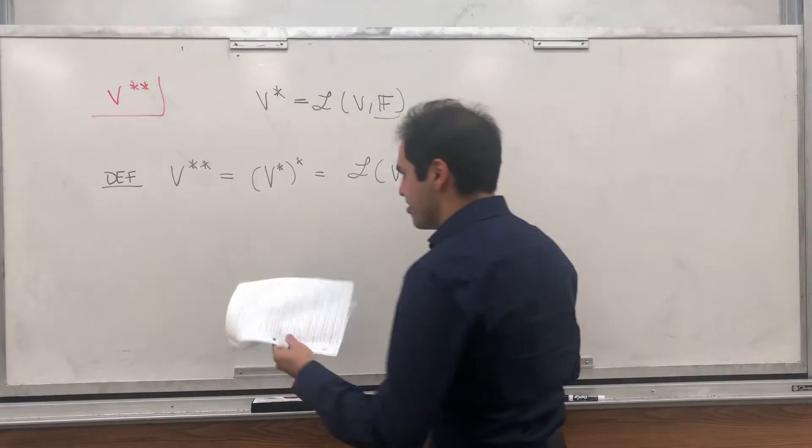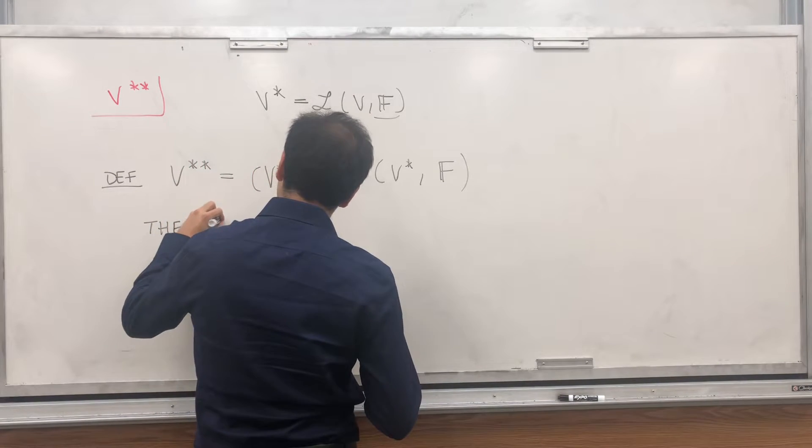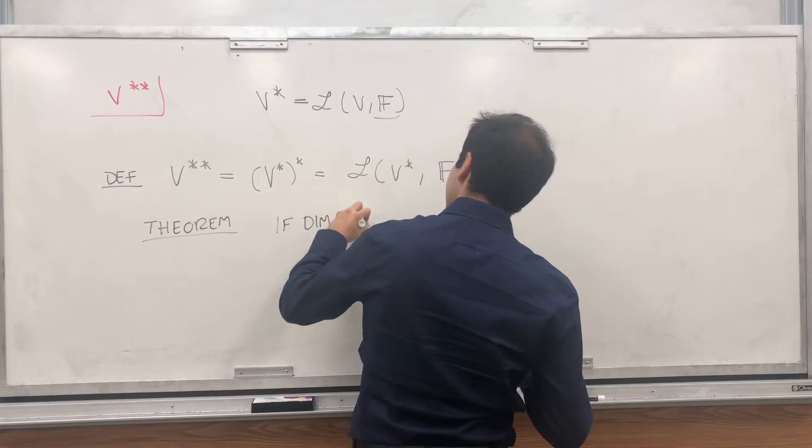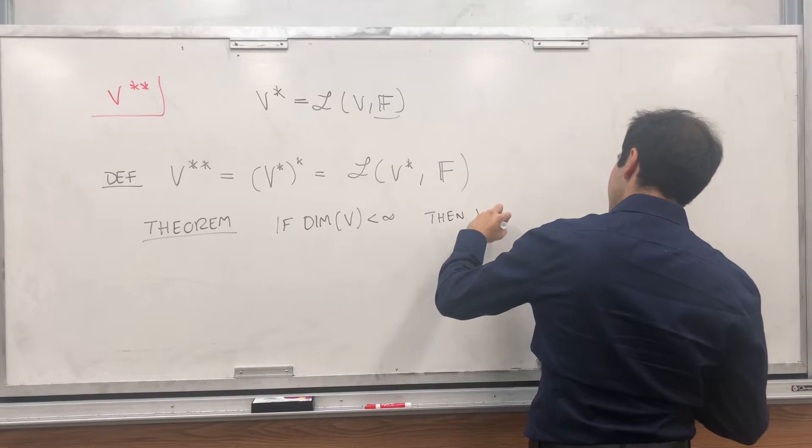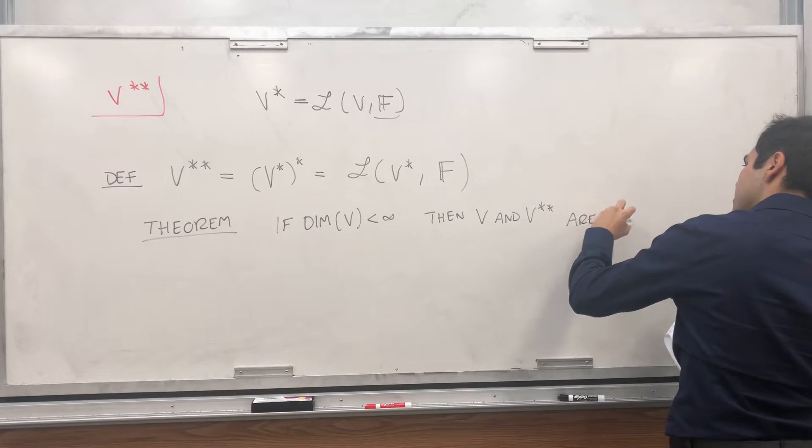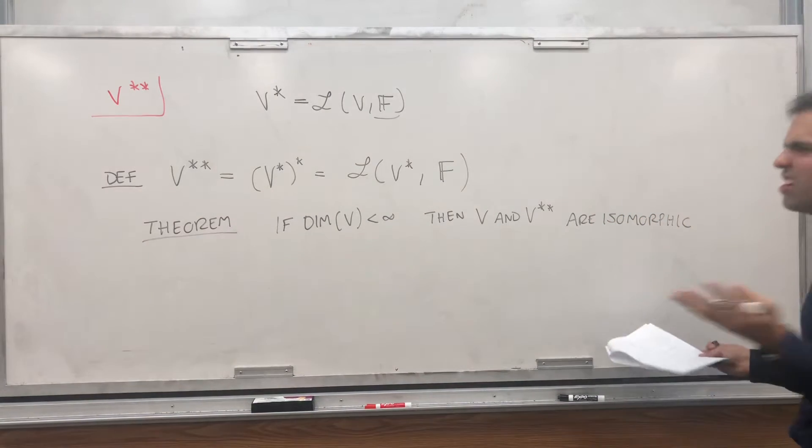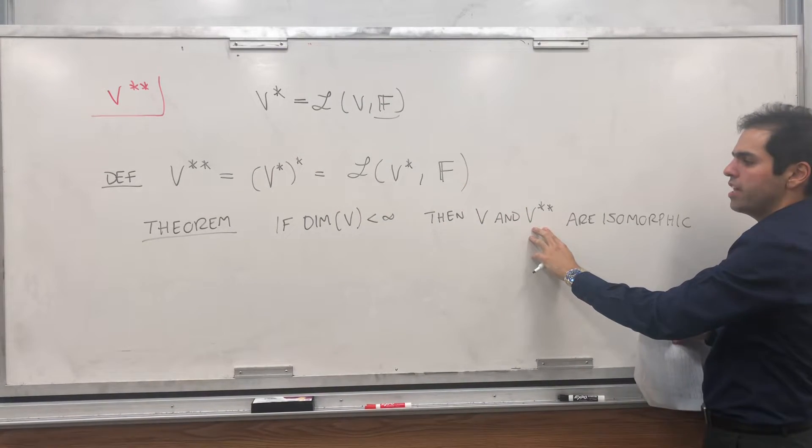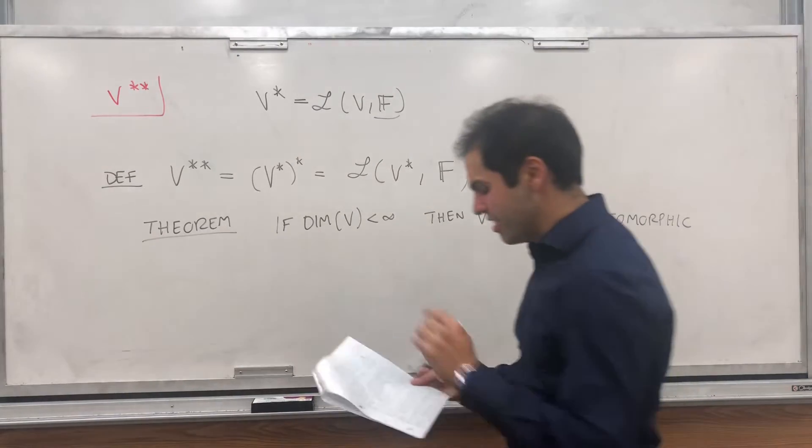And in fact, here's the theorem, at least for finite dimensional vector spaces, so wrong for infinite dimensions. If V is finite dimensional, then V and V double star are isomorphic. And isomorphic means pretty much the same. Technically, they're not the same objects, because those take super functions, and those are just like vectors. But more or less, you're the same.